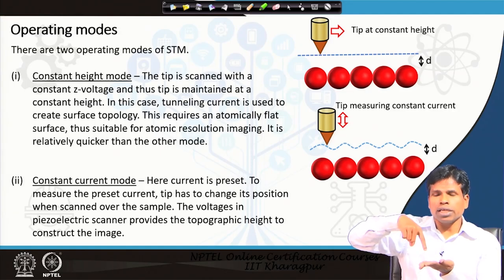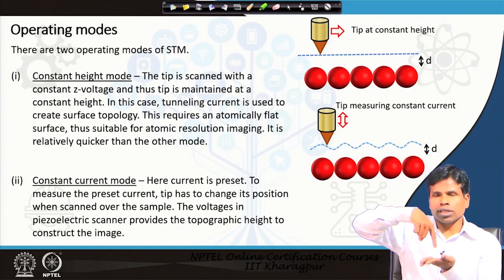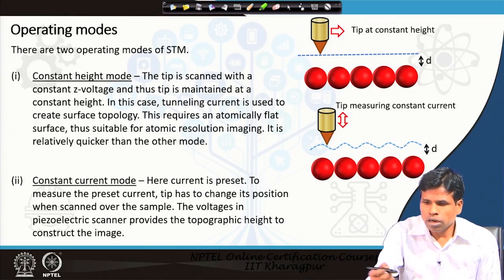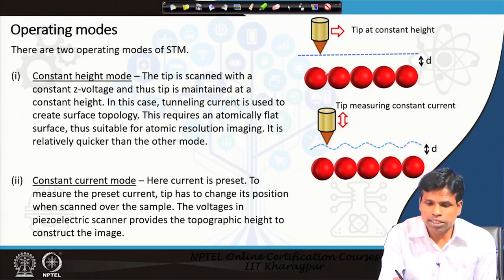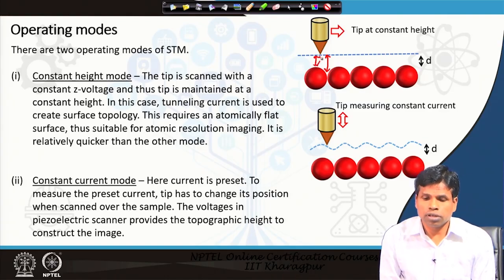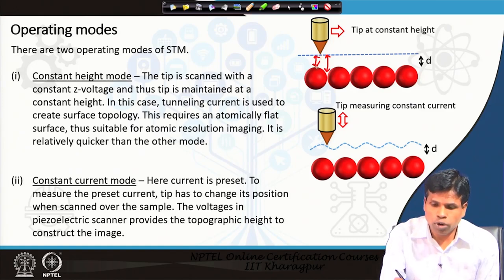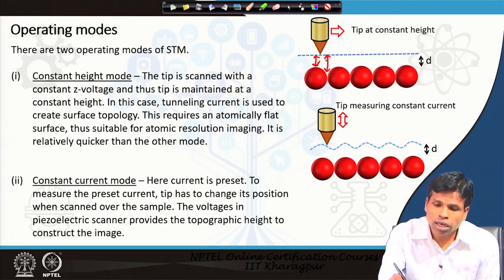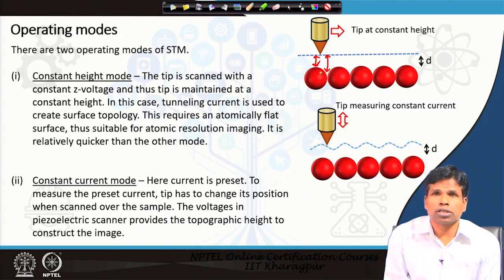As we move at constant height, if at any place there is a protrusion or hill on the sample, then our tip will be much closer to the sample surface. If at any place there is a downward valley, we will have a larger distance between tip and sample. So depending upon the sample height, the gap between the tip and sample varies — at some places the gap is larger and at other places the distance between tip and sample is smaller. When the distance is smaller, we measure a higher tunneling current; when the distance is larger, we measure a smaller tunneling current.